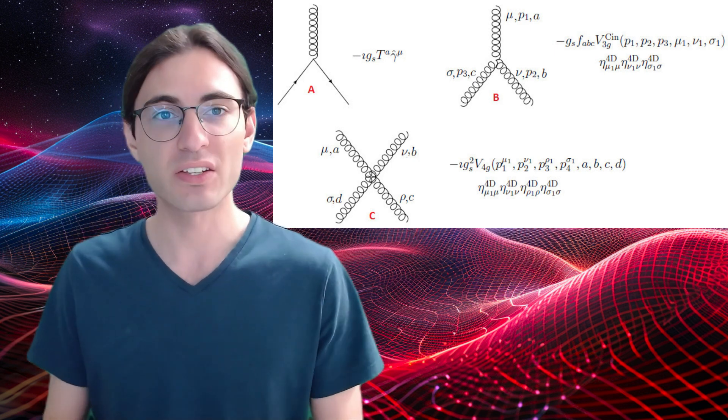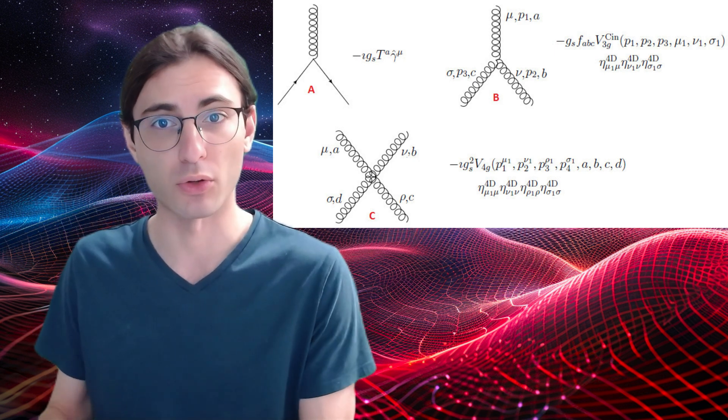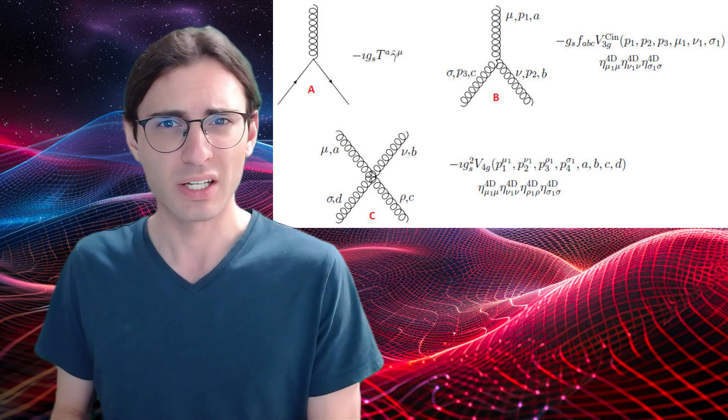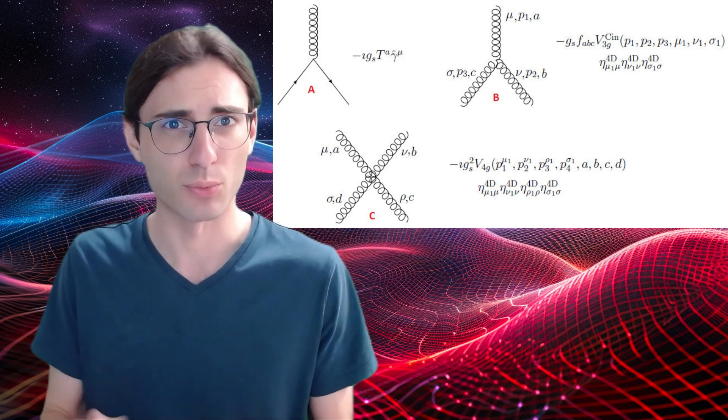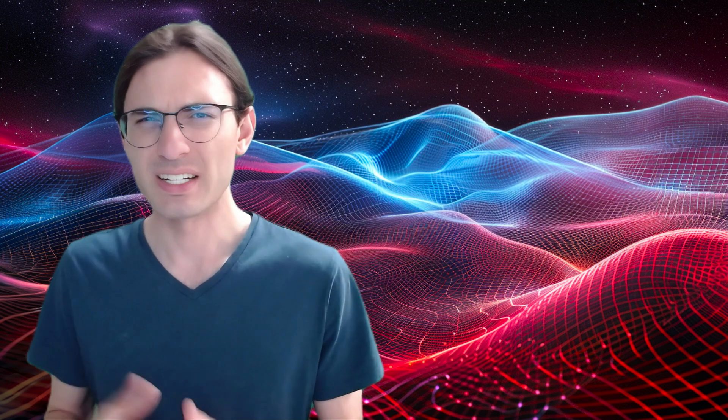And they're completely distinct from just two sequential three-particle interactions — it's like an action, reaction, and re-reaction, or something. These strange additional interaction types happen for the strong and weak forces but not electromagnetism, because they're what are called non-abelian gauge interactions, whereas electromagnetism is an abelian gauge interaction. Essentially, this means that photons don't have electromagnetic charge, but the force-carrying particles for the weak and strong forces do carry their own charge.